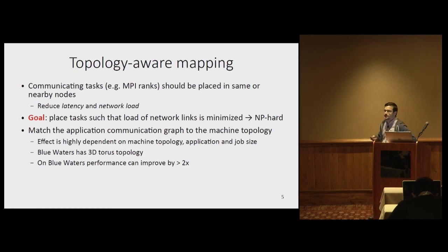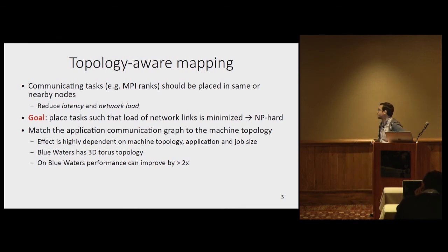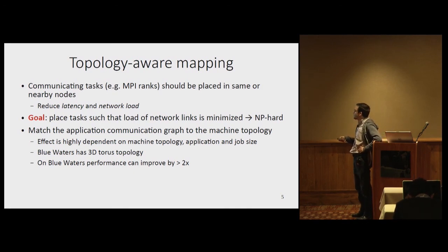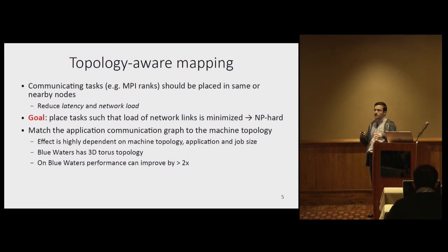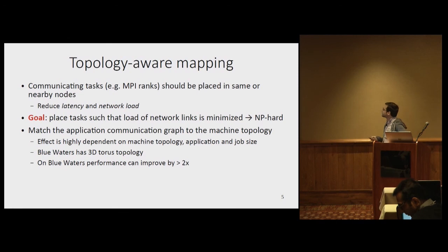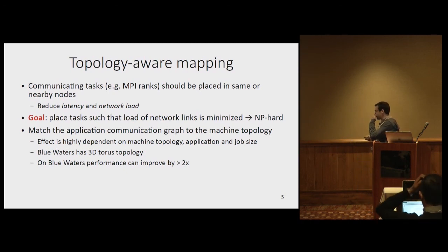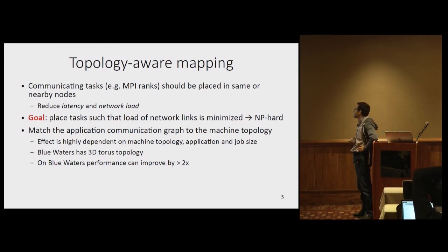For topology-aware mapping — this is just a brief recap since we've talked about this at the last two symposiums and the mini tutorials, and there are slides available. The idea is placing MPI tasks and ranks in your job allocation. The scheduler gives you a set of nodes, and the MPI ranks have to be placed on those nodes in a way that reduces latency and network contention. The ideal goal is to place tasks so that the load on network links is minimized. This is an NP-hard problem, so we solve it with heuristics.